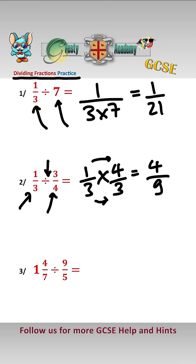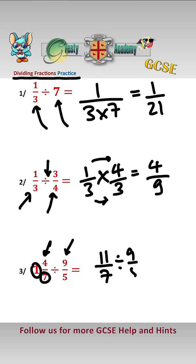The third type is a mixed number divided by a fraction. First we have to convert the mixed number to an improper fraction. To do that, we do 7 times 1 which is 7, add 4 is 11, giving us 11 over 7, divided by 9 over 5.